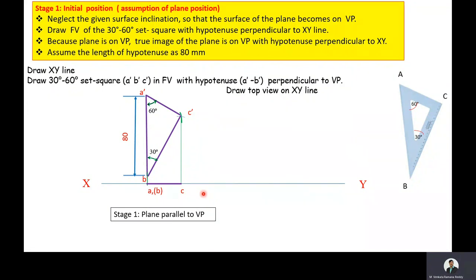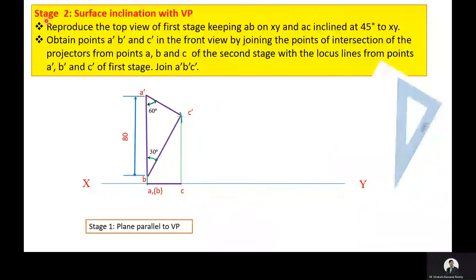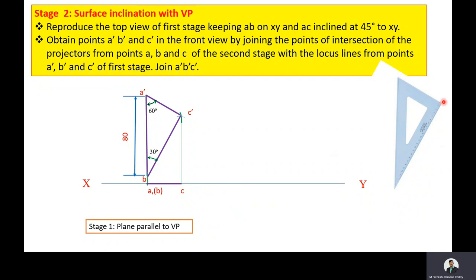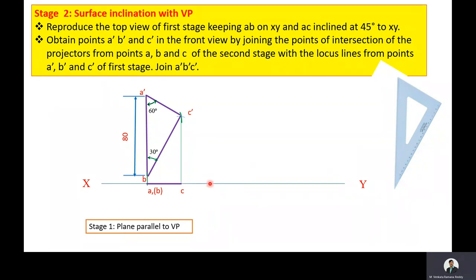We now move to Stage 2. In Stage 2, the surface makes an angle of 45 degrees to the VP, so this top view is to be tilted at 45 degrees to the VP. We are keeping the longest side on the VP and tilting the total plane so that it makes an angle of 45 degrees to the VP. We need to redraw this top view so that it makes an angle of 45 degrees to the XY line. Use a protractor to reproduce the initial top view at 45 degrees to the XY line.